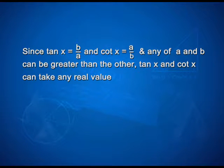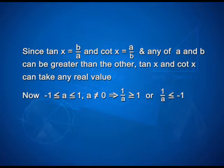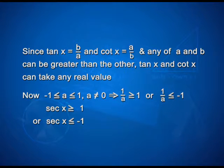Since tan x equals b upon a and cot x equals a upon b, and either of a or b can be greater than the other, tan x and cot x can take any real value. Now, since minus 1 ≤ a ≤ 1 where a ≠ 0, it implies 1/a ≥ 1 or 1/a ≤ minus 1. That implies sec x ≥ 1 or sec x ≤ minus 1.